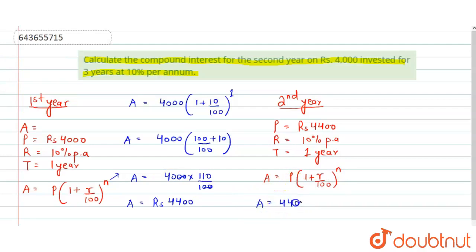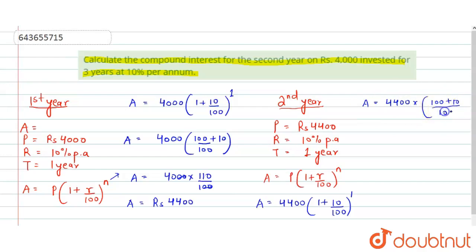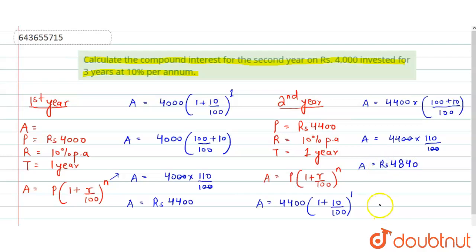Putting the values: amount equals 4400 into (1 + 10/100) to the power 1. Simplifying, amount equals 4400 into 110/100. Cancelling the zeros, we get amount equals 4840. So the amount at the end of the second year is rupees 4840.